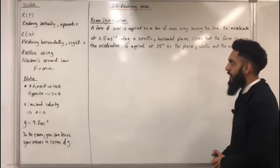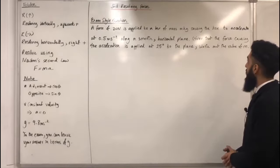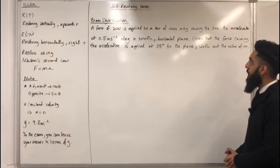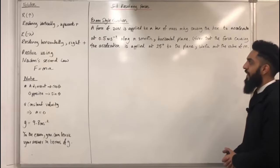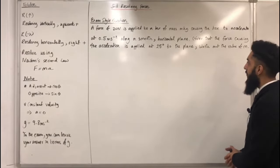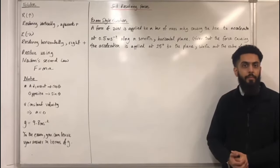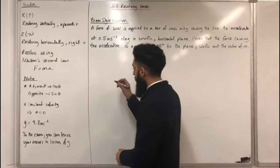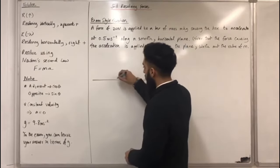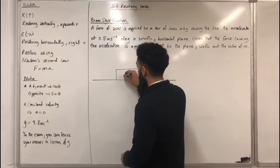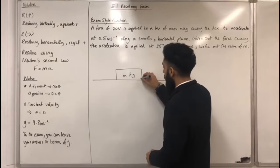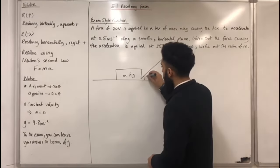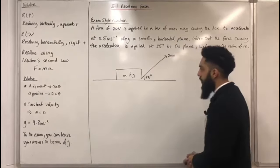Here is an exam-style question. A force of 20 Newtons is applied to a box of mass m kg, causing the box to accelerate at 0.5 metres per second per second along a smooth horizontal plane. Given that the force causing the acceleration is applied at an angle of 25 degrees to the plane, work out the value of m. The first step is to set up a force diagram: a smooth plane with a box of mass m kg, and a force of 20 Newtons applied at 25 degrees to the horizontal.